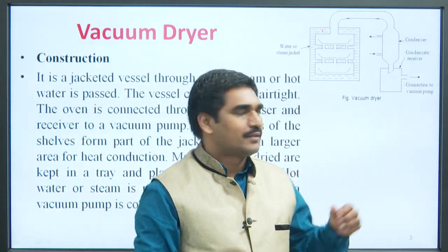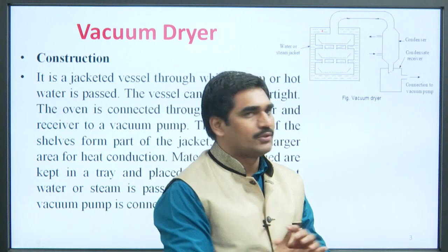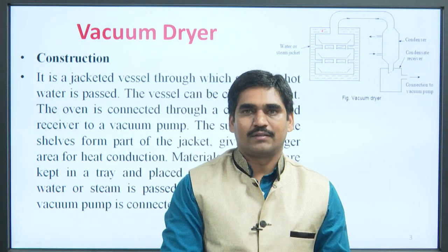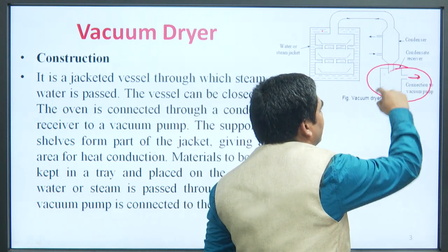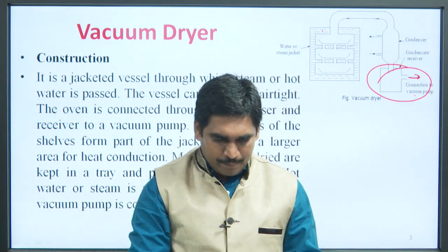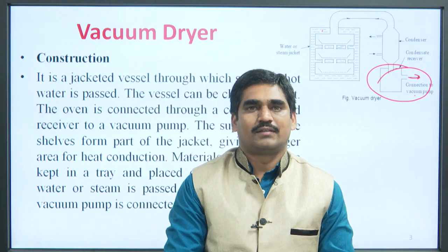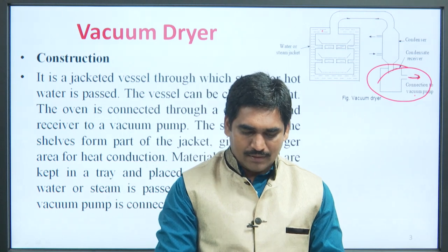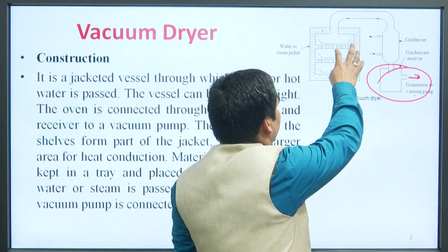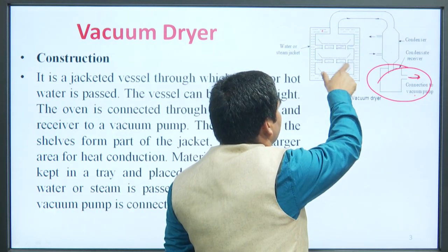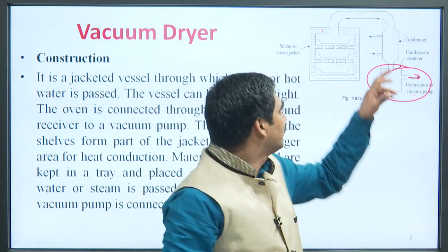The vessel, as you see, is a tight closed container. This vessel is further connected to an oven, and the oven is connected through a condenser, which is connected to a vacuum pump. From here, this receiver is connected to the vacuum pump, and with the help of this, vacuum is created in the dryer. The support cells, which form part of the jacket, give a larger area for heat conduction. As you see in the diagram, these are the trays where materials are kept — these different cells are also jacketed on each side.